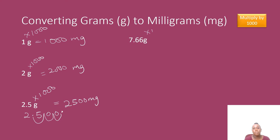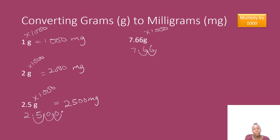All I need to do is multiply by 1000. What happens when I'm multiplying by 1000? I have to shift my decimal point to the right three times. One, two — I don't have another number so I put a zero and then move it. So 7.66 grams in milligrams will be 7660 milligrams.